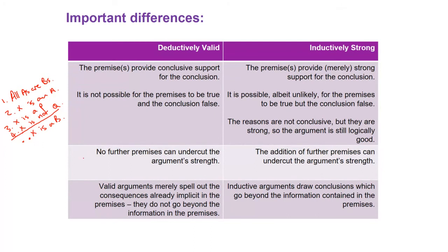With a valid argument, once an argument is valid, nothing you can do to it can make it invalid. A valid argument is what they call indefeasible — that's not a word anyone needs to know, but if something is indefeasible it can't be weakened. Whereas an inductively strong argument, if you get further information, that can change the strength of the argument.